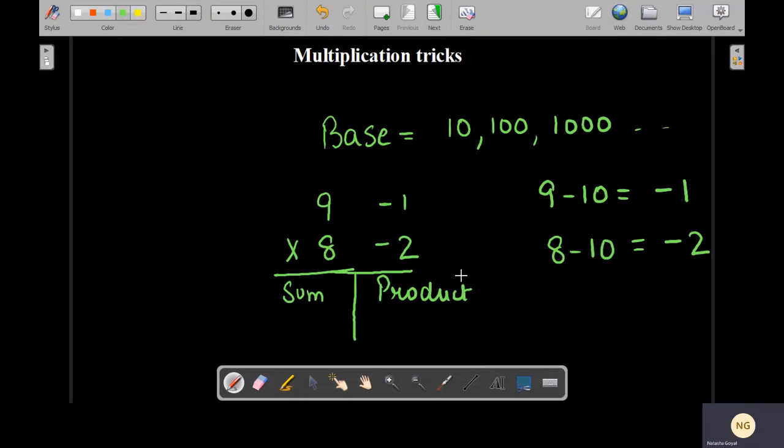Now we'll write the sum of the diagonal numbers. So the diagonal numbers like 9 and 2: 9 plus minus 2 will give you 7, and 8 plus minus 1 will give you 7 as well. So the sum of both the diagonals will be the same, that is 7. So we will write 7 over here.